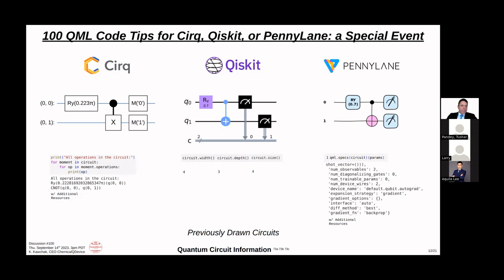This slide continues the last one — these three graphics are the same circuit. You often want information about the circuit, because imagine you have real amplitudes for your variational layer with a ZZ feature map and you don't want to count everything manually. For CIRQ, you use moment.operations, which gives you the ry parameter and the 0.7, or pi times 0.223, as well as the CNOT gate from 0 to 1. For Qiskit, circuit.width corresponds to the vertical — two quantum gates and two classical gates — while circuit.depth counts as three: ry, CX, and the two measurement gates stacked.